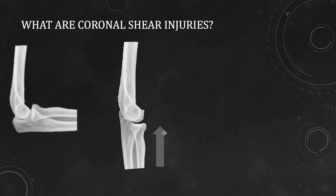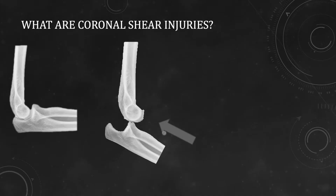If there is a varus or valgus component, the individual fragments depending on the side of stress will fracture. In case of valgus stress there will be more force on the lateral side, resulting in radial head fracture and capitulum fracture. On the other side, varus stress means more stress on the ulnar side, resulting in either coronoid fracture or fracture of the trochlea in the coronal plane — a coronal shear injury. This mechanism applies when the force is axial.